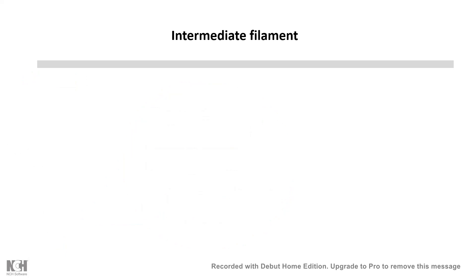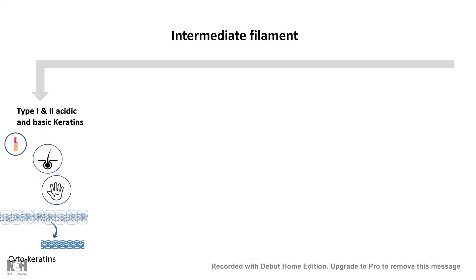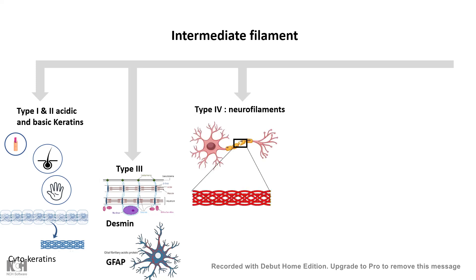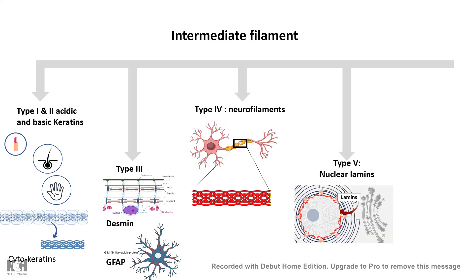Intermediate filaments are divided into broad categories. Type 1 and Type 2 are acidic and basic keratins, mostly found in nails, hair, and glabrous skin, and collectively known as cytokeratins. Type 3 is a diverse class which includes desmin, which helps muscle to contract and is found in muscle, and also GFAP, which is found in astrocytes. Type 4 is a class of neurofilaments which regulates neuronal physiology. Type 5 is the most popular and common — the nuclear lamins. Type 6 includes nestin, which is found in radial glial progenitors of the developing brain.